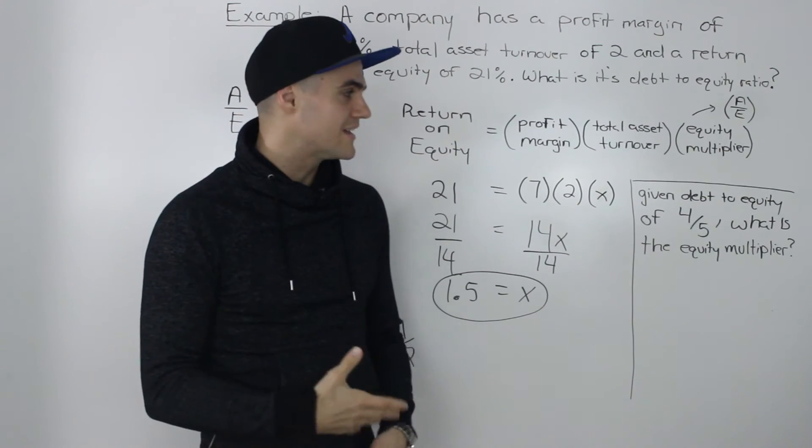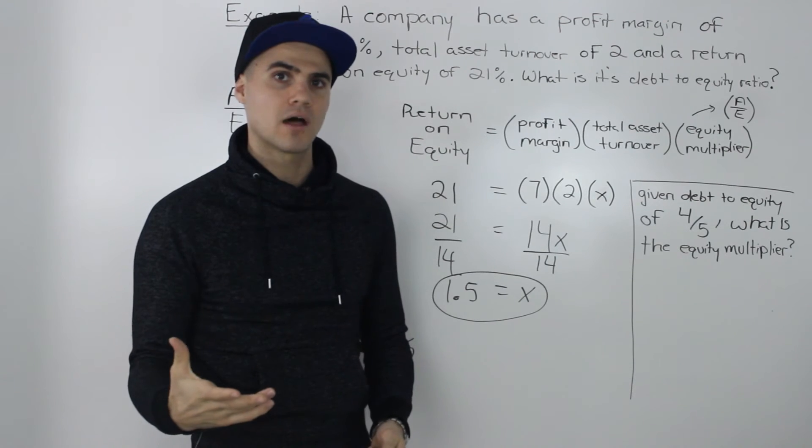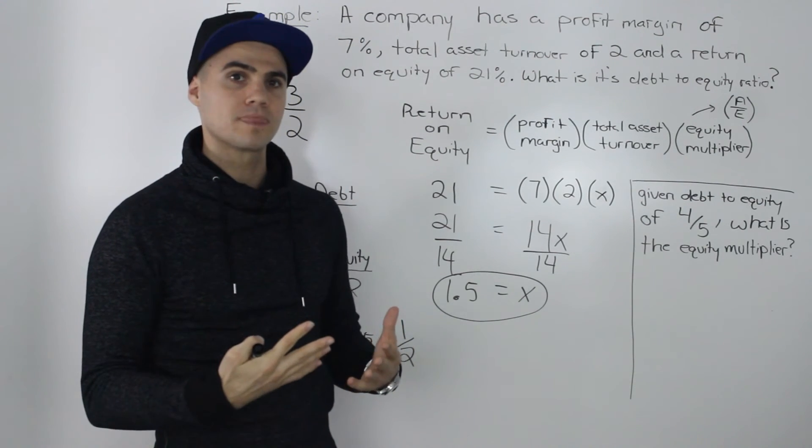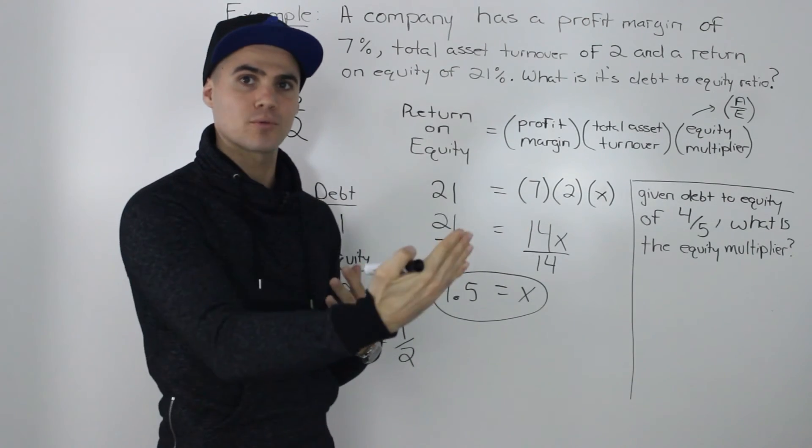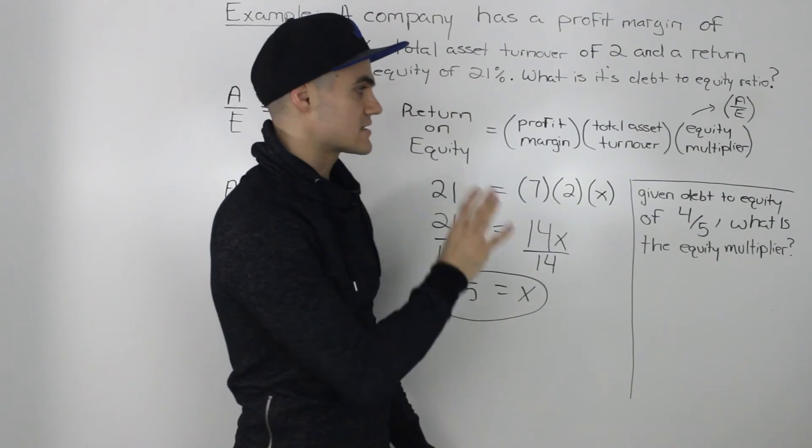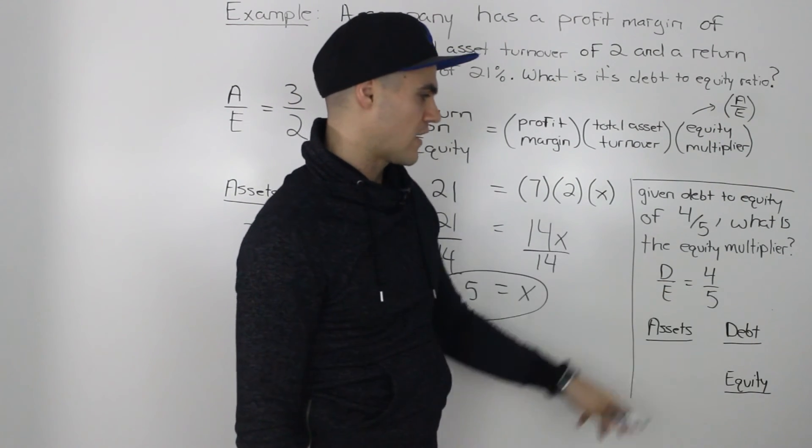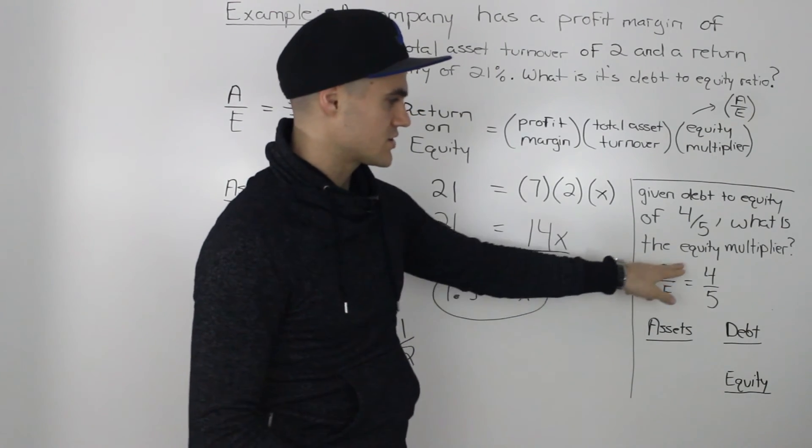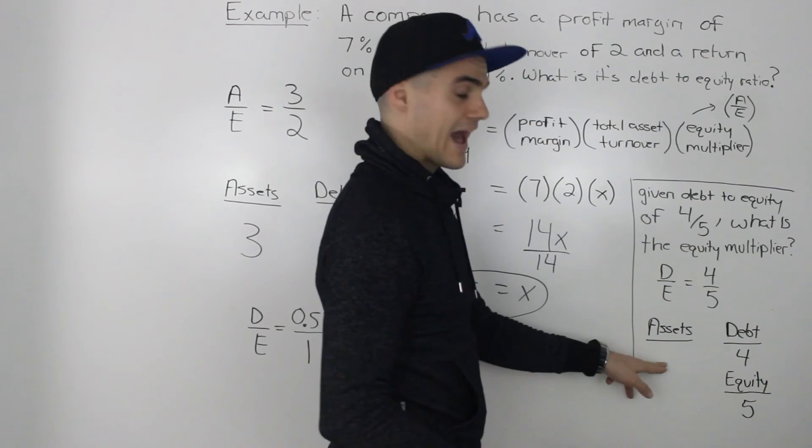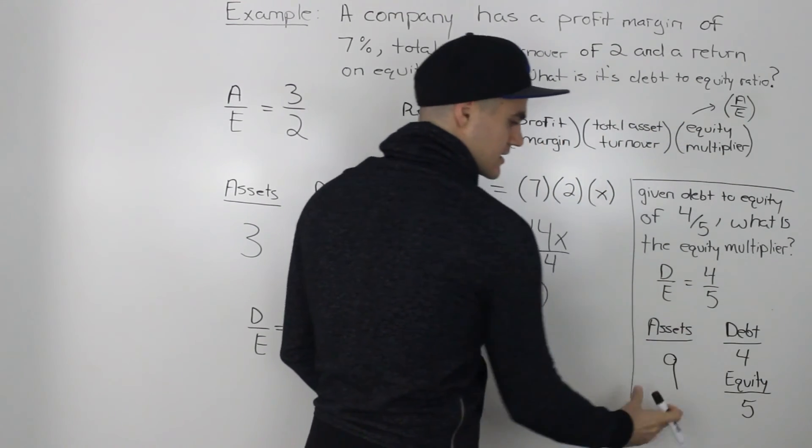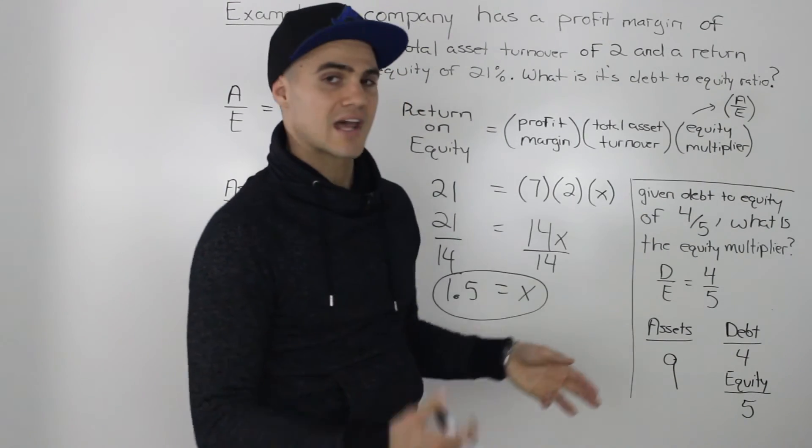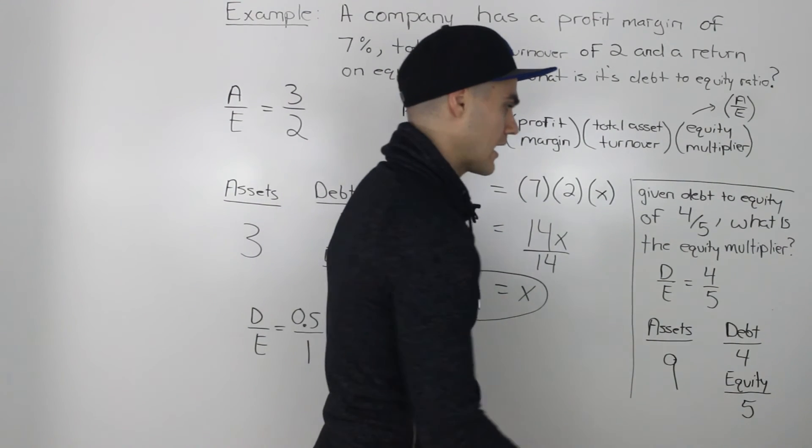Now, you can also go the other way. You can be given the debt to equity ratio and asked to find the equity multiplier. So I decided to put this little mini example here before finishing the video. Given a debt to equity ratio of 4 over 5, what is the equity multiplier? So debt over equity is equal to 4 over 5. Same thing here, we have to construct a mini balance sheet. So the debt we know is 4, the equity we know is 5. And that means we know that the assets have to be 9, because the right side has to equal the left side. So now that we're given this mini balance sheet, we can find out what the equity multiplier is.